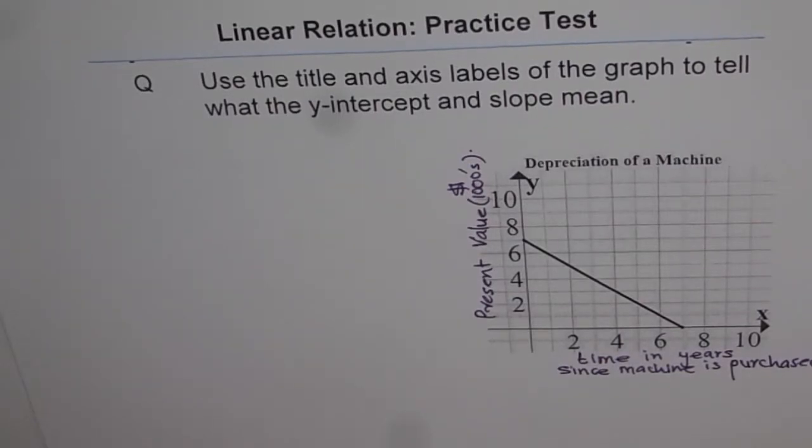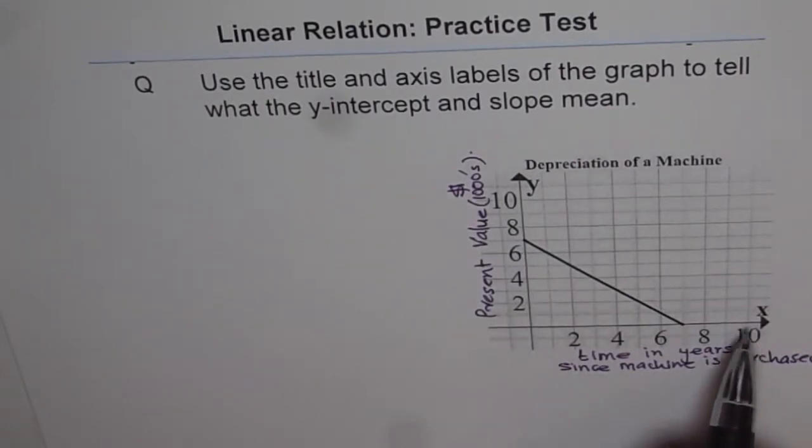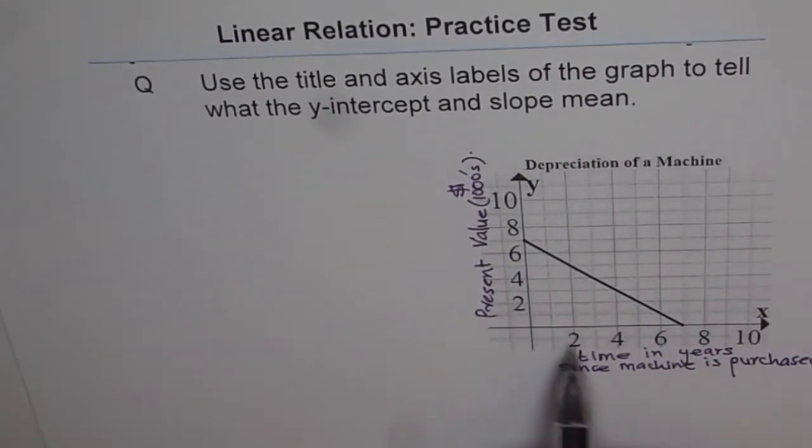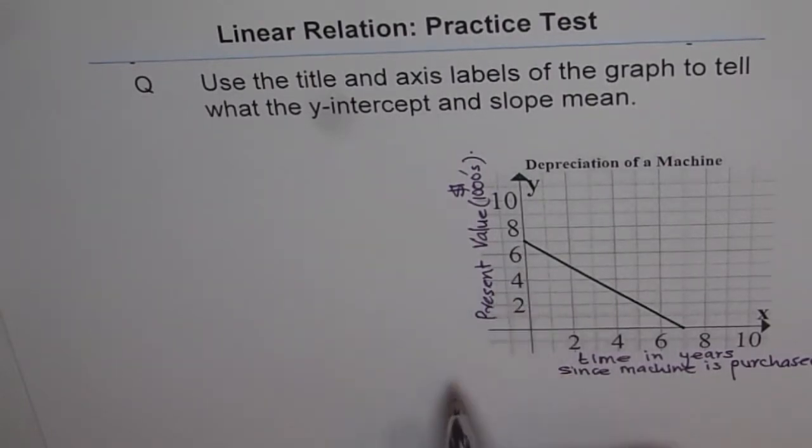Now, from a graph, y-intercept is the value when along the x-axis you have 0. That means in this case, time in years since machine is purchased, that means new machine. So y-intercept represents the cost of brand new machine.